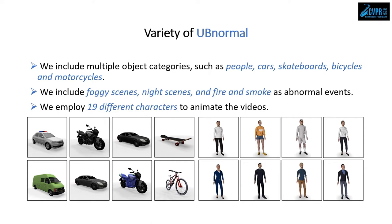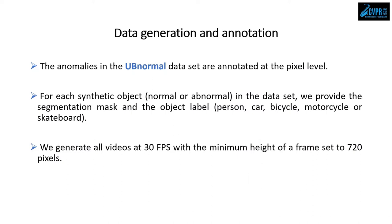To further increase the variety of the dataset, we include foggy conditions, fire, and smoke as abnormal events. All anomalies in the dataset are annotated at the pixel level regardless of the split. We also provide the segmentation mask and the object label for each synthetic object from AbnormalCR. The videos are generated at 30 fps with a minimum height of 720 pixels.